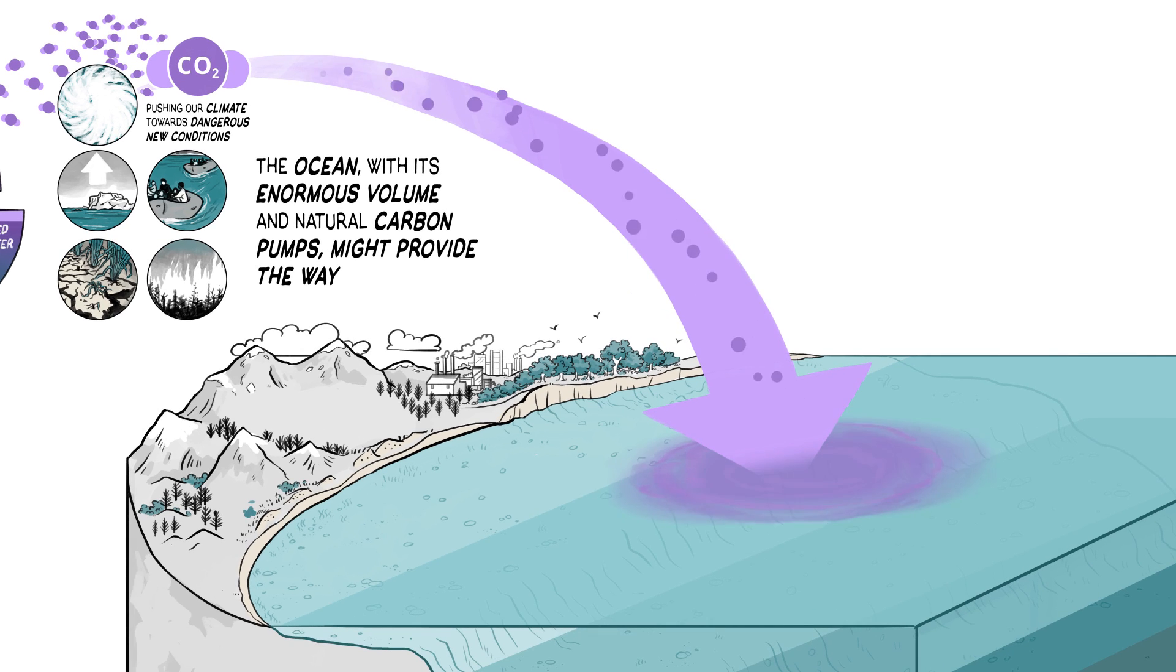CO2 diffuses into the surface layer of the ocean whenever it is more abundant in the air than in the water. Once dissolved, powerful carbon pumps remove CO2 from the surface, pulling yet more of it into the ocean.